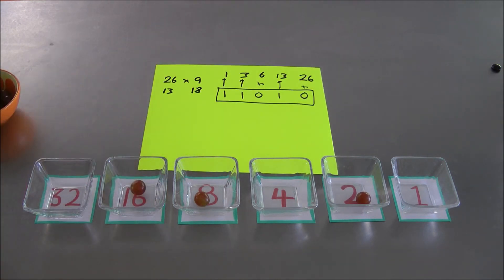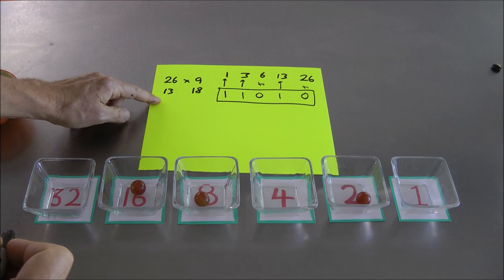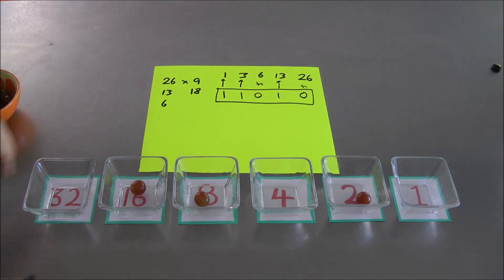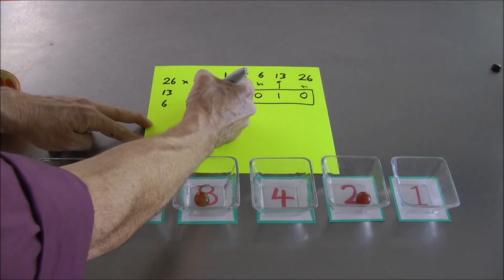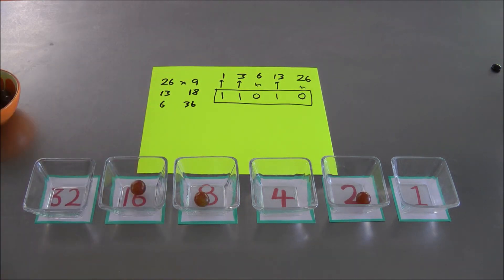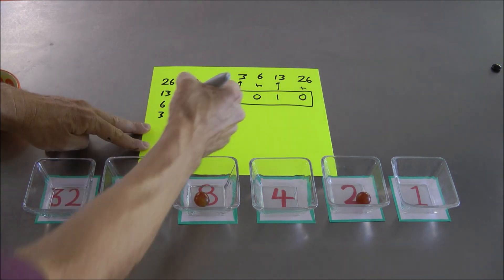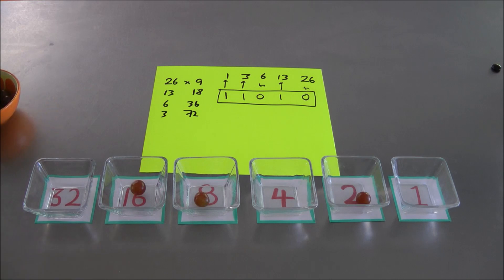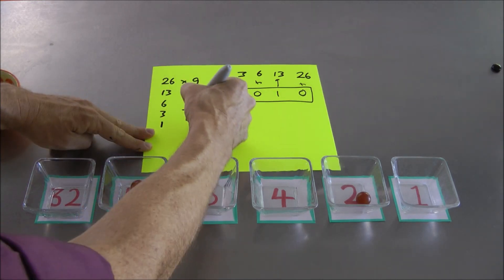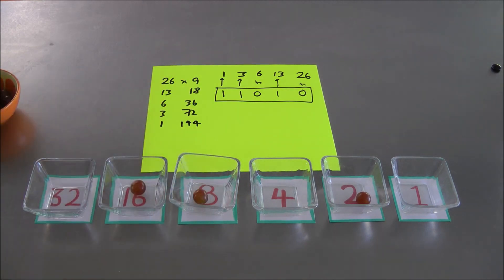I'm going to halve again on the left and double on the right. Half of 13 is 6 and a half, but also ignore the remainder like I did before. And double 18 is 36. Now halve the one on the left. That's 3. Double the one on the right, 72. And halve the one on the left. Half of 3 is 1 and a half. Ignore fractions. And double the one on the right is 144.